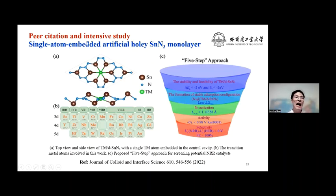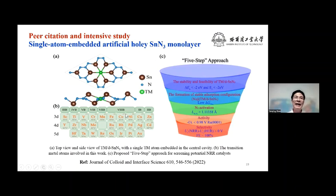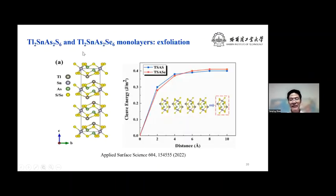Many peers cited our papers positively. Especially, the journal Advanced Functional Materials highlighted and praised our work. Best of all, our predicted SNN3 monolayer attracted the interest of Wang et al., so they conducted an in-depth study of single transition metal atoms embedded in artificial poly-SNN3. They found four structures have highly selective and active electrocatalytic nitrogen reduction.